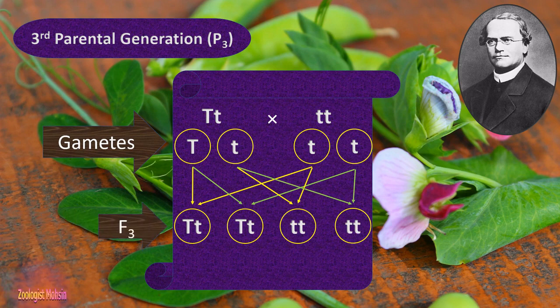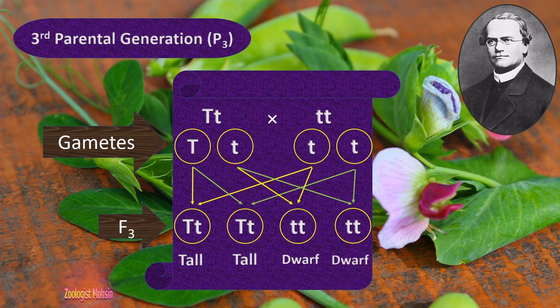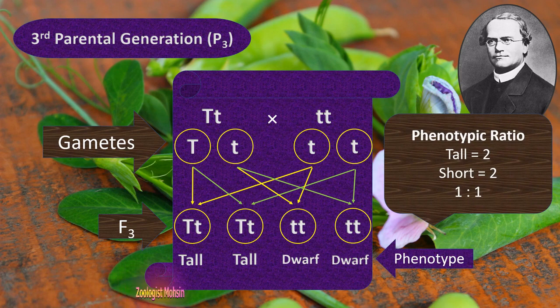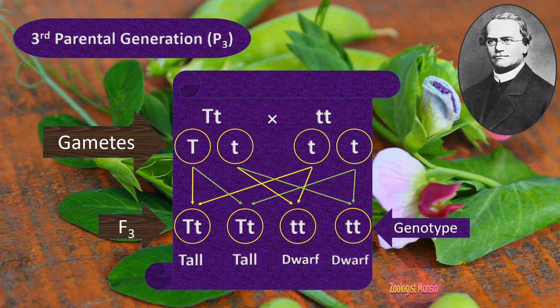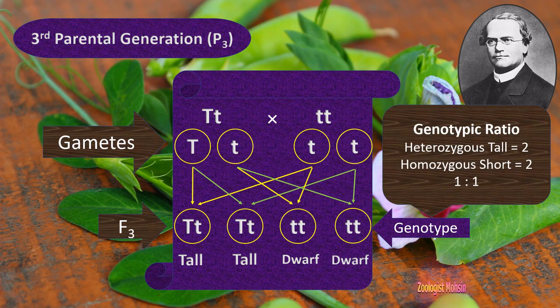Here is the F3 generation. The first one is tall, the second is tall, the third is dwarf, and the fourth one is also dwarf. The phenotypic ratio of this third cross is tall 2 and short 2, so the simplest ratio is 1:1. Similarly, the genotypic ratio is heterozygous 2 and homozygous short 2, so the simplest ratio is also 1:1. Thank you.